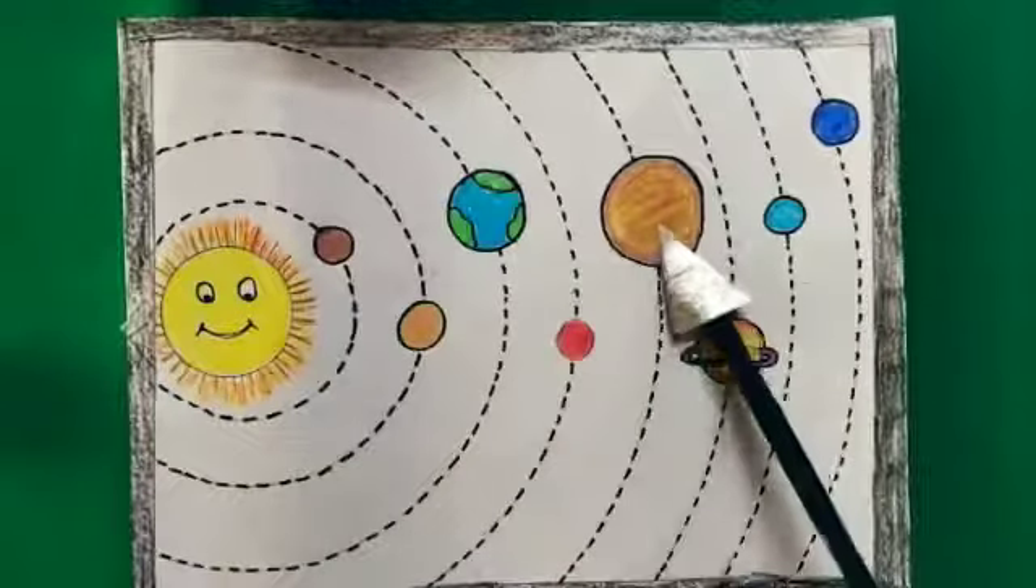Now let's have a quick look at the solar system. This is Sun, the first planet is Mercury, Venus, Earth, Mars, Jupiter, Saturn, Uranus and Neptune.